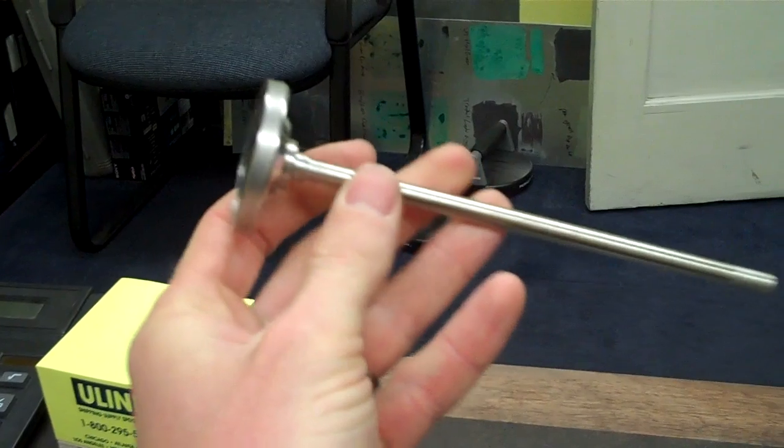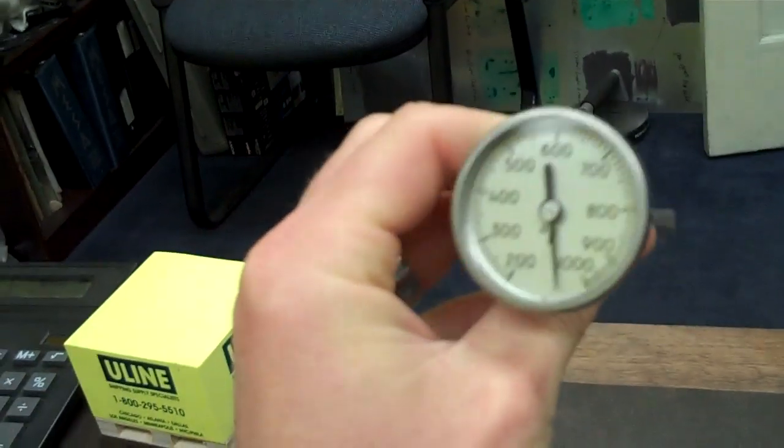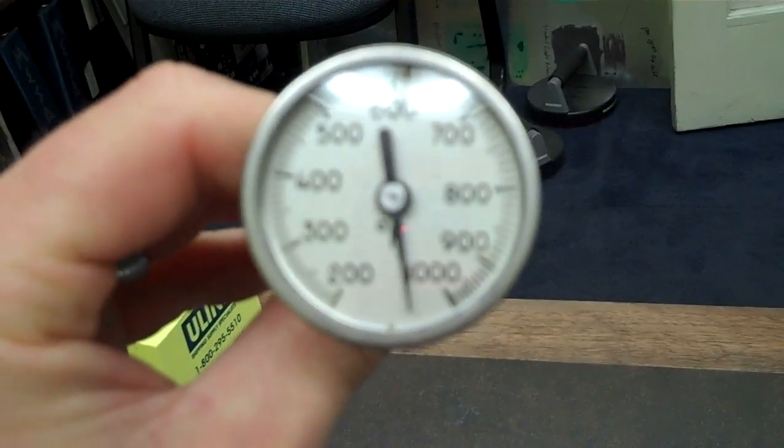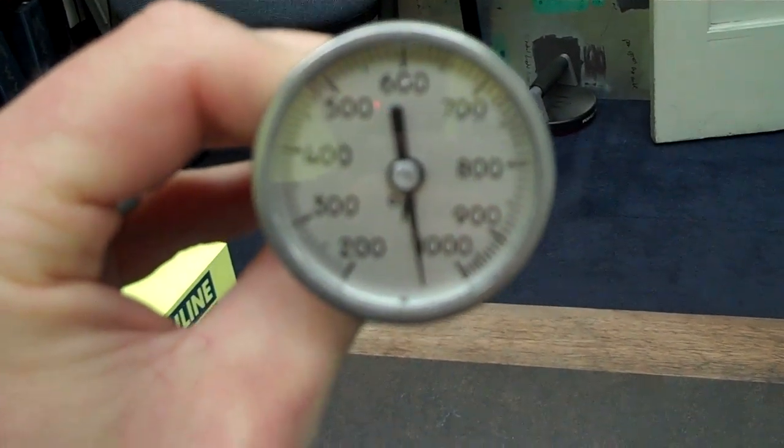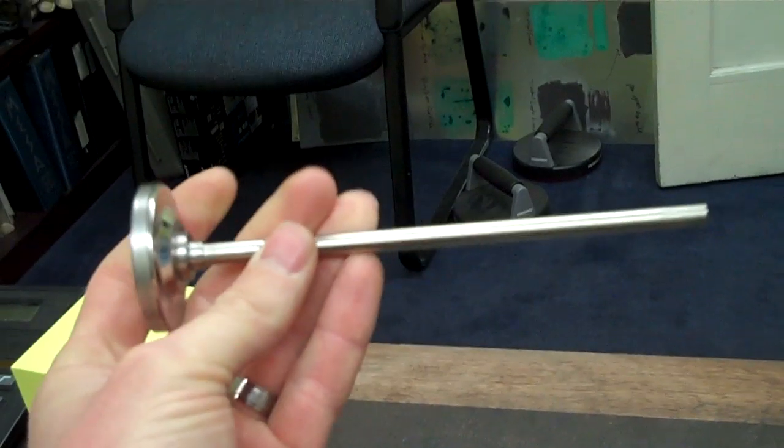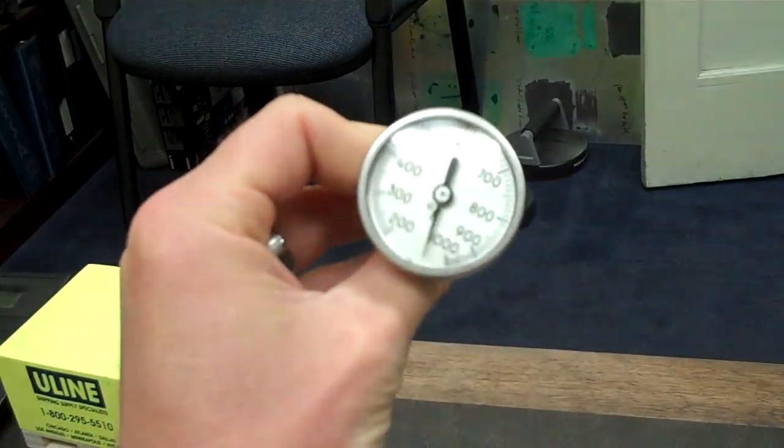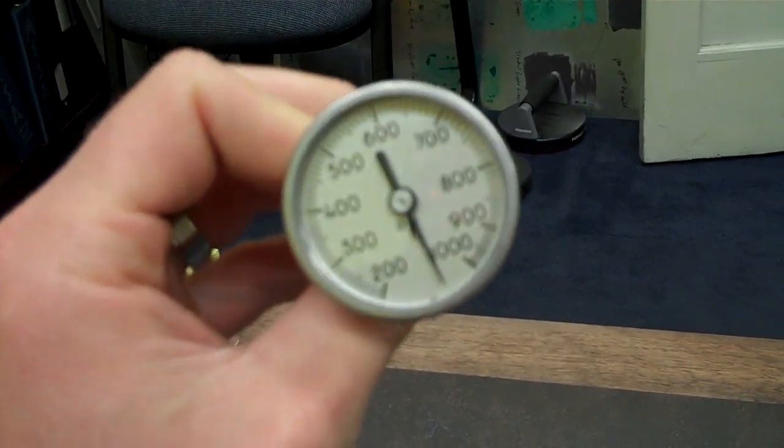Here we have our casting thermometer. It's good for up to 1,000 degrees, with the range showing 200 to 1,000 on the dial. It has about a six inch stem with a one and a half inch dial.